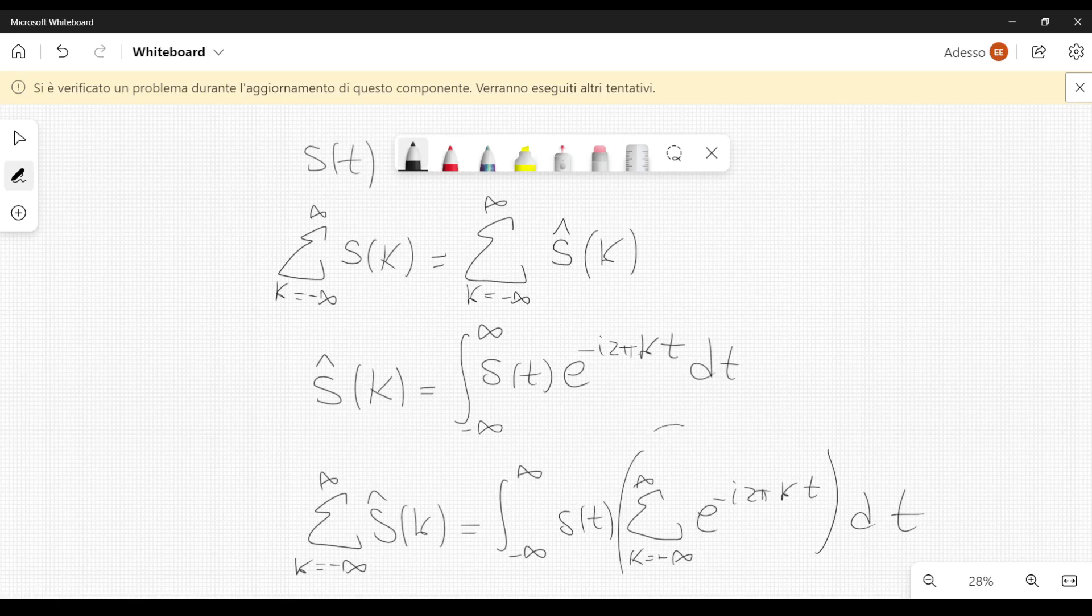And now we simply have to find another way to represent this formula, but this formula here can also be written as a summation over k from minus infinity to plus infinity of Dirac deltas, t minus k, like this.